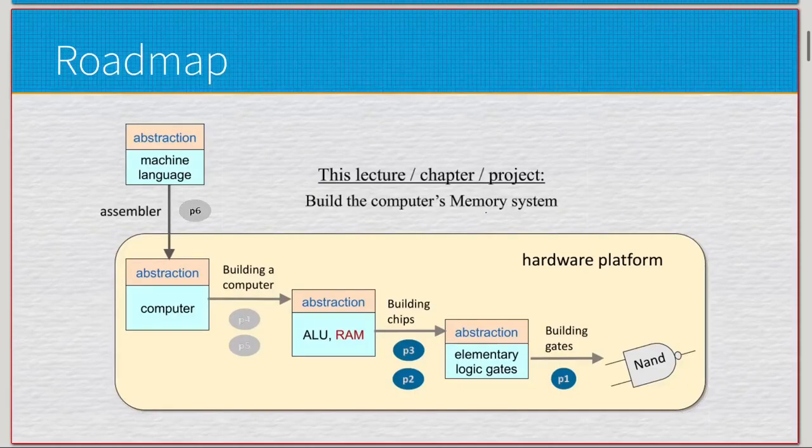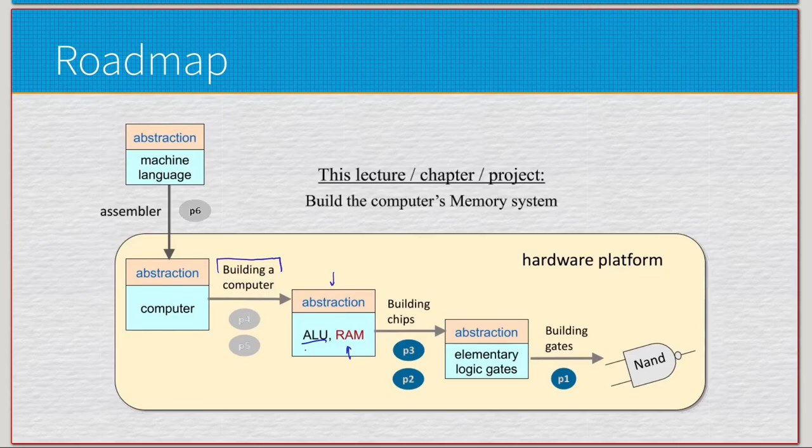Right, so real quick back to the roadmap. Everything we've done so far has led us up to the ALU. We went from NAND, building some gates, a little abstraction, elementary logic gates, build some chips, get some more abstraction, and then culminated in the ALU. That's what we finished in chapter two. Now we're moving to creating RAM and it's not going to be just RAM, but a lot of other components that are very critical once we get to this point right here.